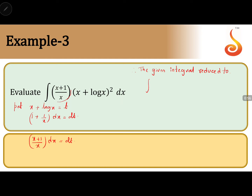So (x + 1/x) dx is dt, and (x + log x) is taken as t squared in the denominator, giving integral of 1/t squared, which is t to the power negative two. The integral of t squared — or 1/t² — gives t cube by 3 plus c, so the answer is (x + log x) whole cube divided by 3 plus c.